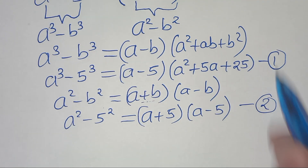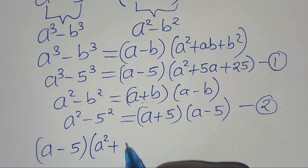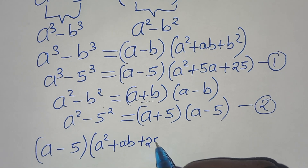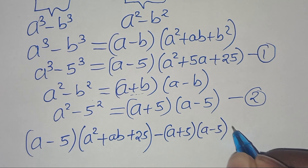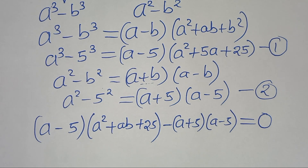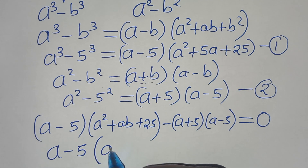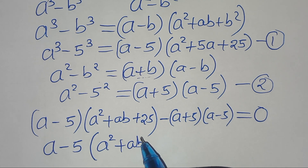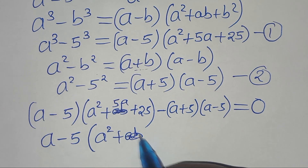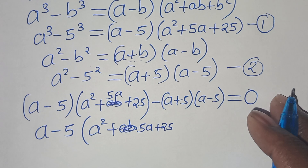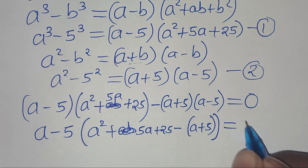Let's combine equation 1 and equation 2. So we have a minus 5 times the quantity a squared plus 5a plus 25, then we have minus a plus 5 times a minus 5, this is equal to 0. This implies that a minus 5 is common here, so we can factor out a minus 5. Into the parentheses we have a squared plus 5a plus 25, then we have minus a plus 5, this is equal to 0.